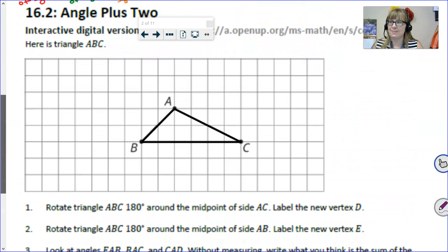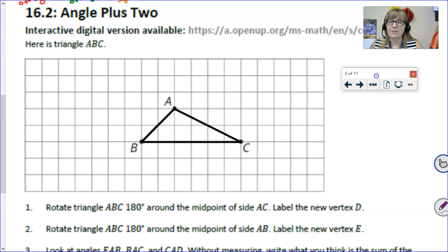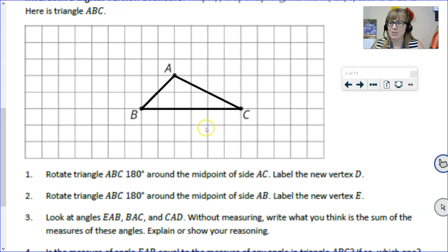Now we're ready for the lesson. Online learners, you do have an applet for this. I'm not going to be using the applet because I've spent a lot of time building this PowerPoint, so I'm going to use that PowerPoint. To get started, it says to rotate triangle ABC 180 degrees around the midpoint of side AC.